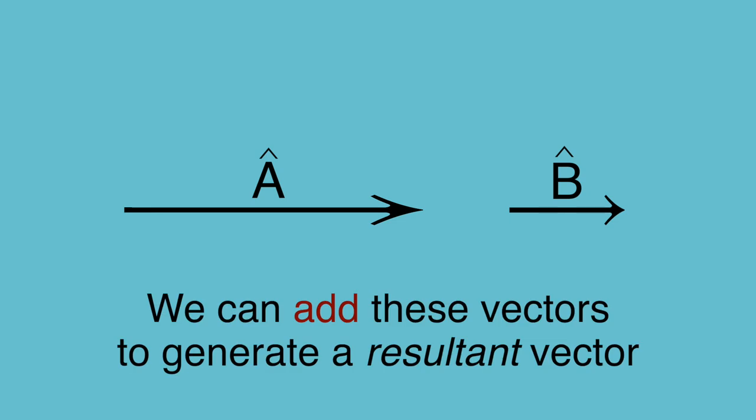Now suppose we want to add them together. Doing so will create a third vector, that is the sum of a dash and b dash. It looks like this.